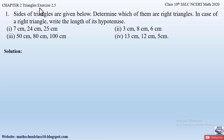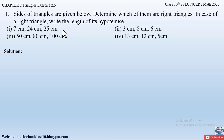Question number 1 from Exercise 2.5, Chapter 2 - Triangles says: sides of triangles are given below, determine which of them are right triangles. In case of a right triangle, write the length of its hypotenuse. There are four parts to this question, and in each part they have given us the sides of triangles and we have to determine whether the triangle is a right triangle or not. We already know from Pythagoras theorem, that is theorem 2.8, that in a right-angle triangle the hypotenuse square is equal to the sum of the squares of the other two sides.